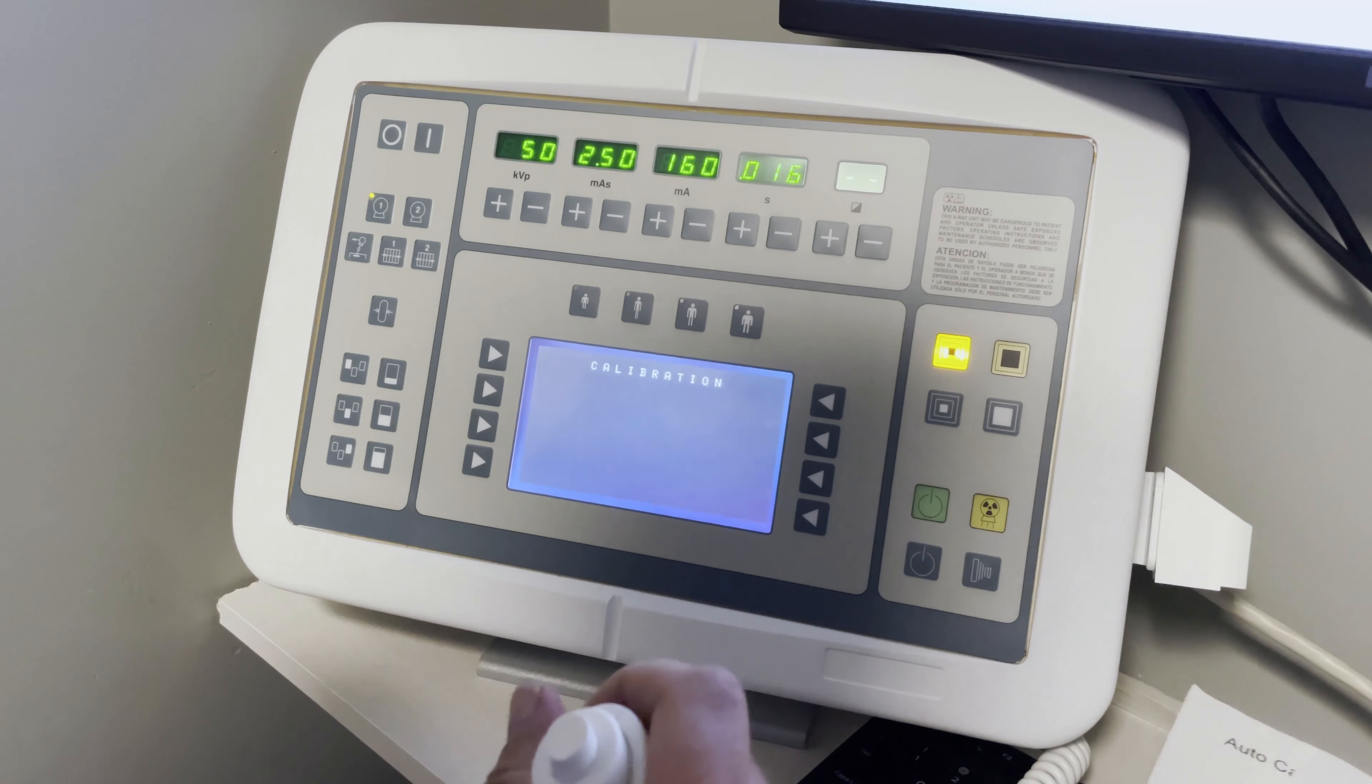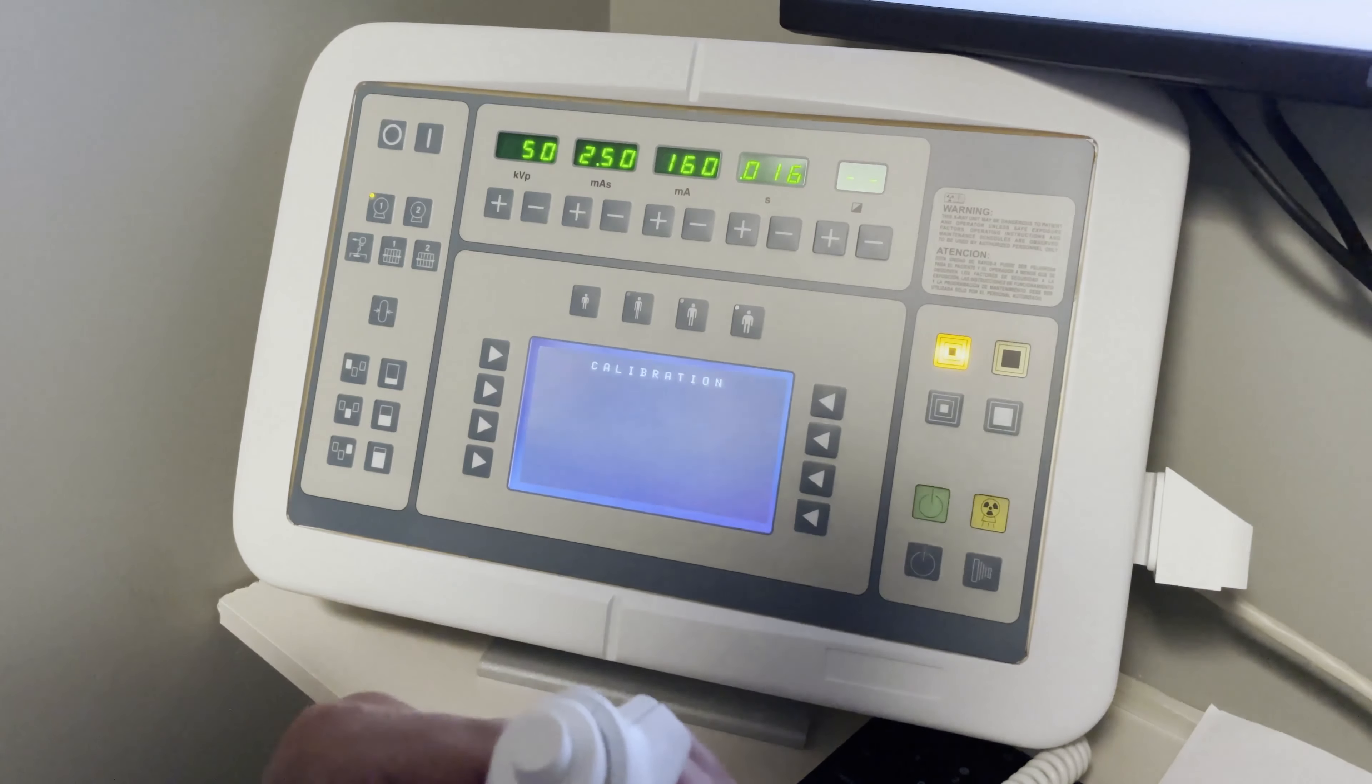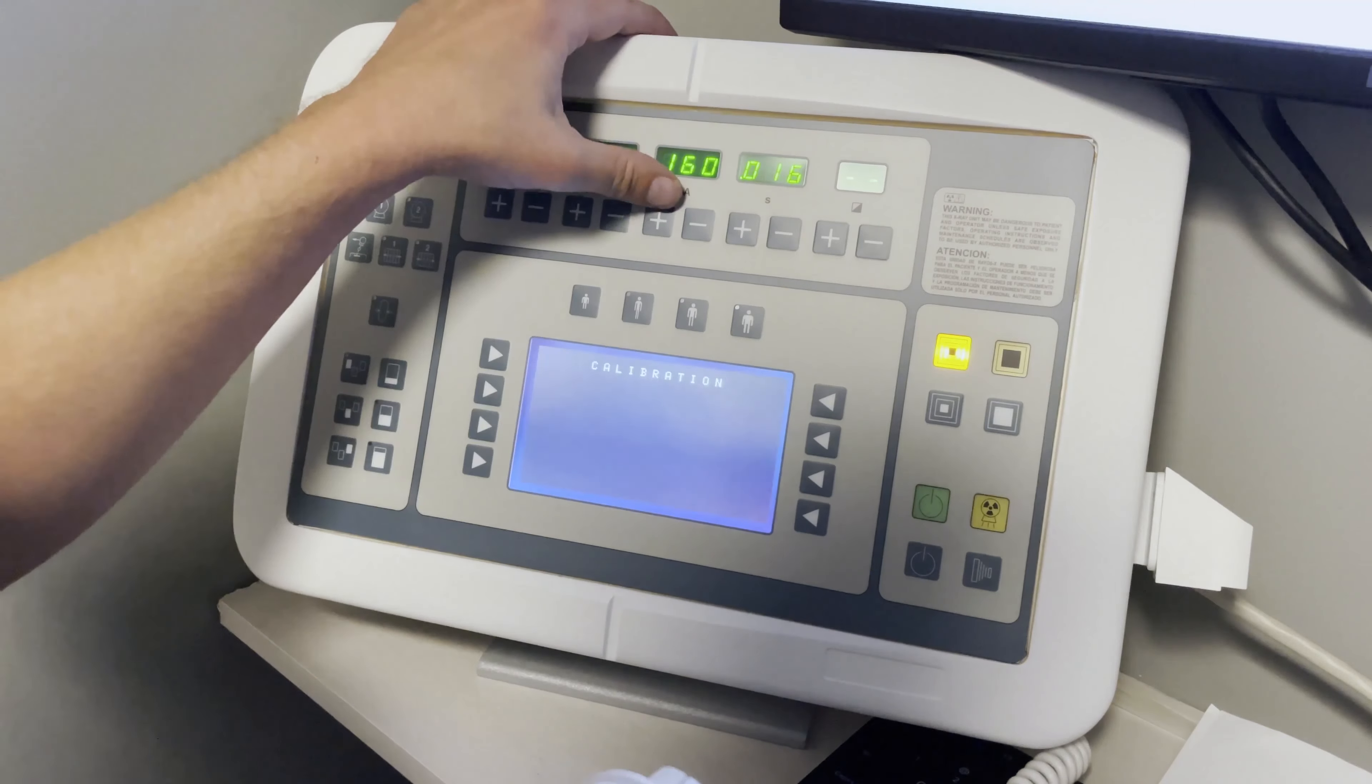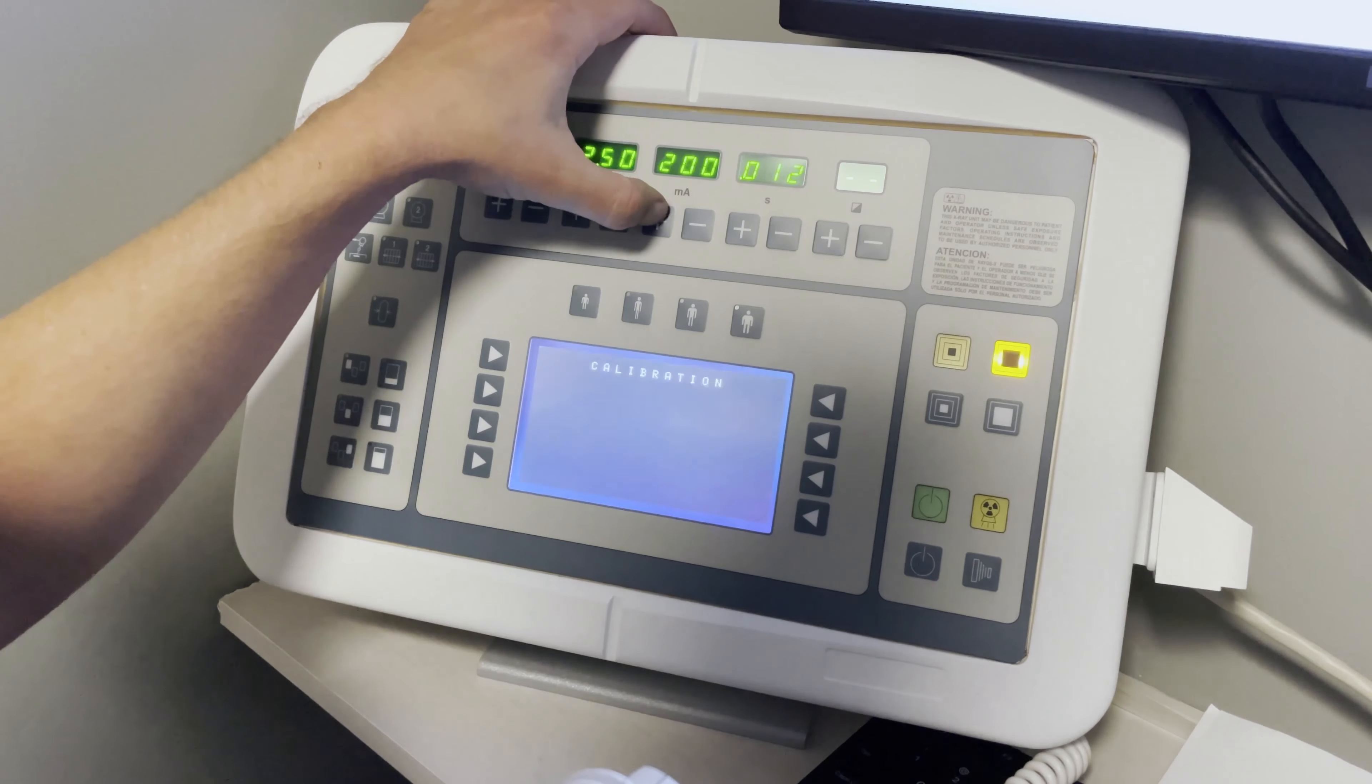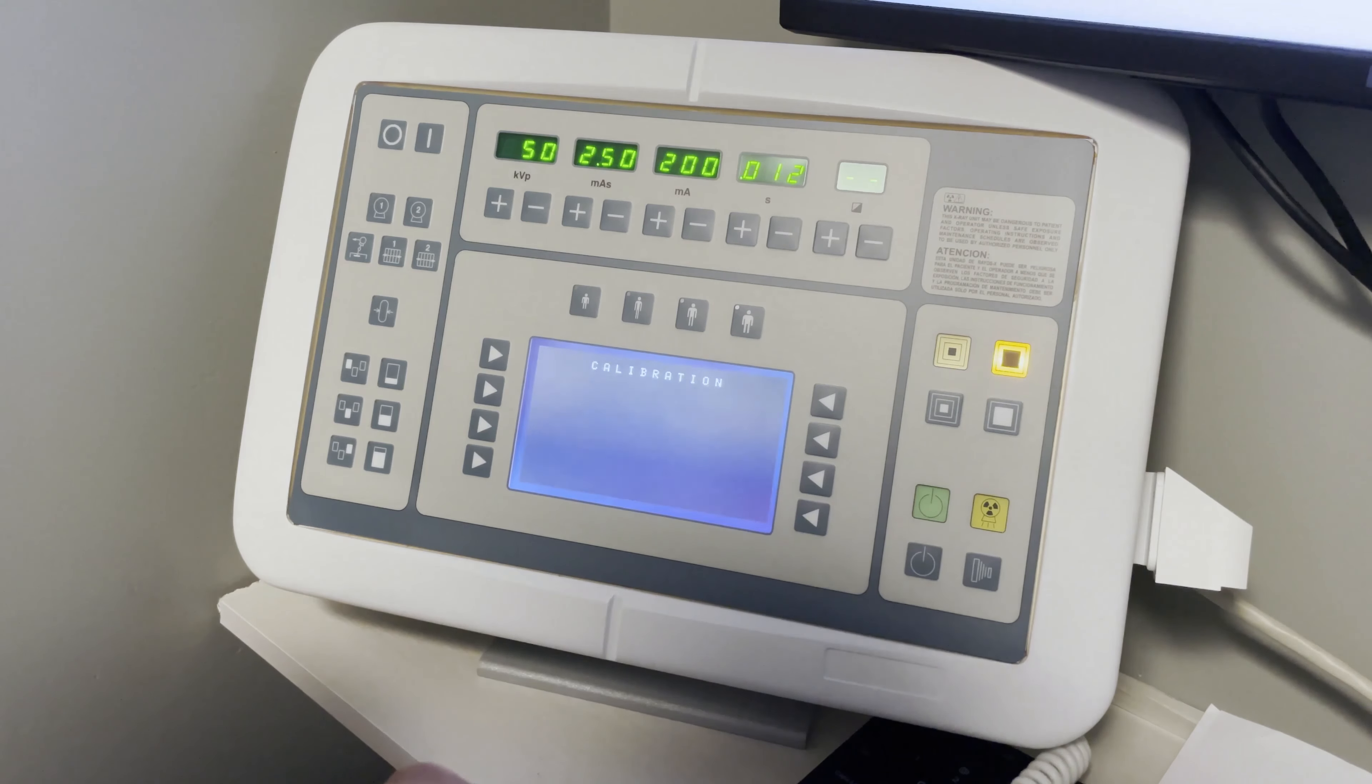Now that we've finished the low focal, we're going to move to the high focal. To move to the high focal, we want to increase the MA from 160 up to 200. And you'll see that it will move from the low focal to the high focal.